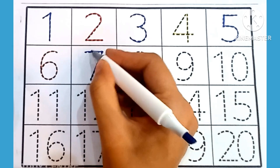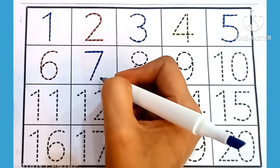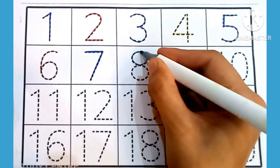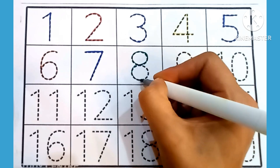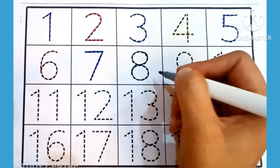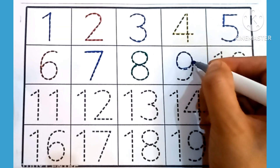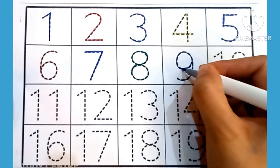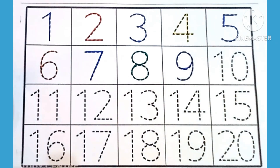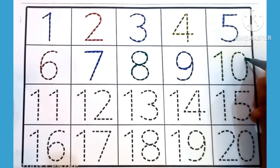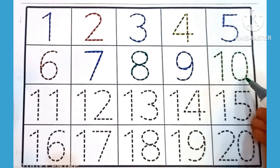Five — which is this number? Five. Six — which is this number? Six. Seven — which is this number? Seven. Eight — which is this number? Eight. Nine — which is this number? Nine. Ten: one, zero — which is this number? Ten.